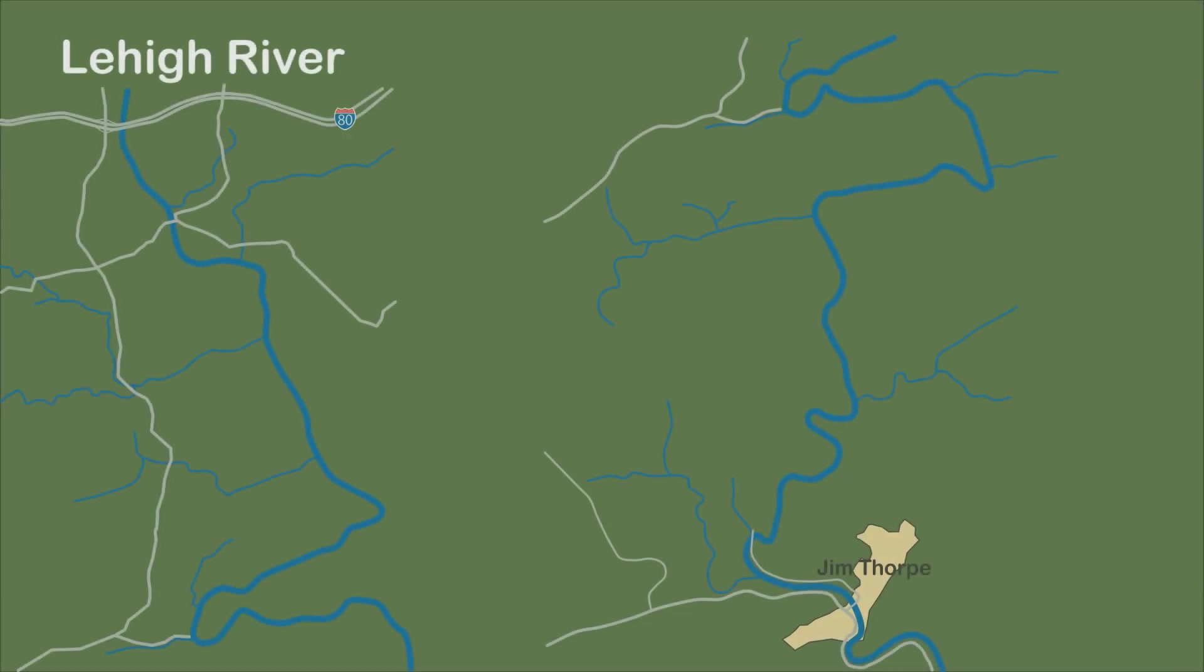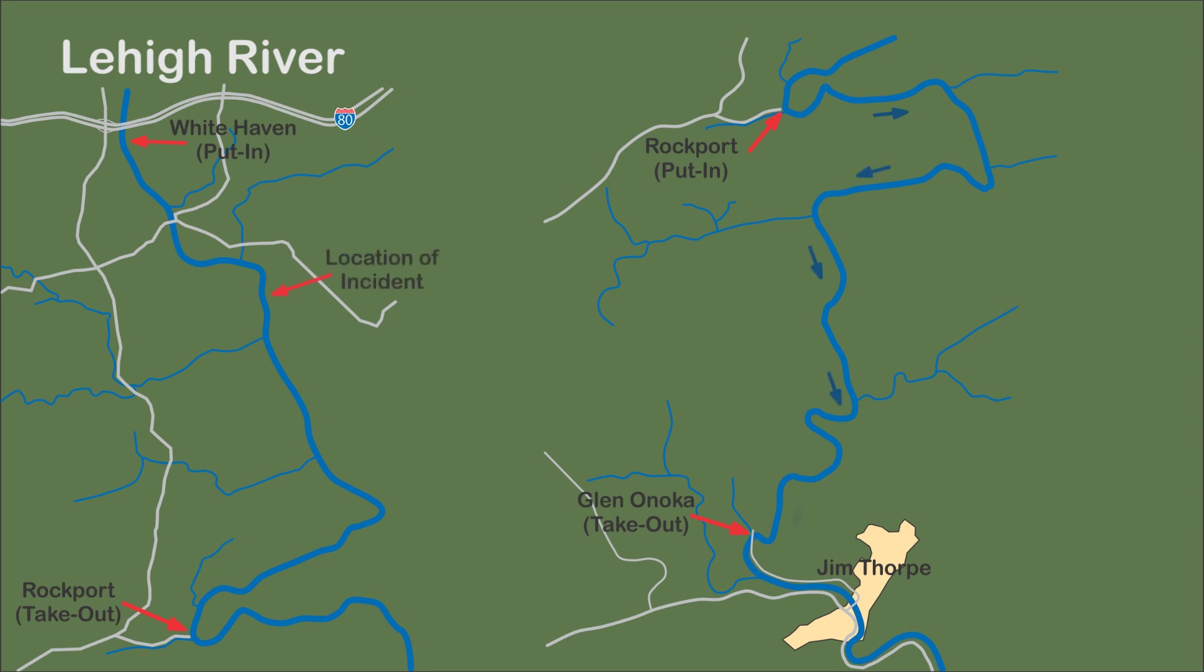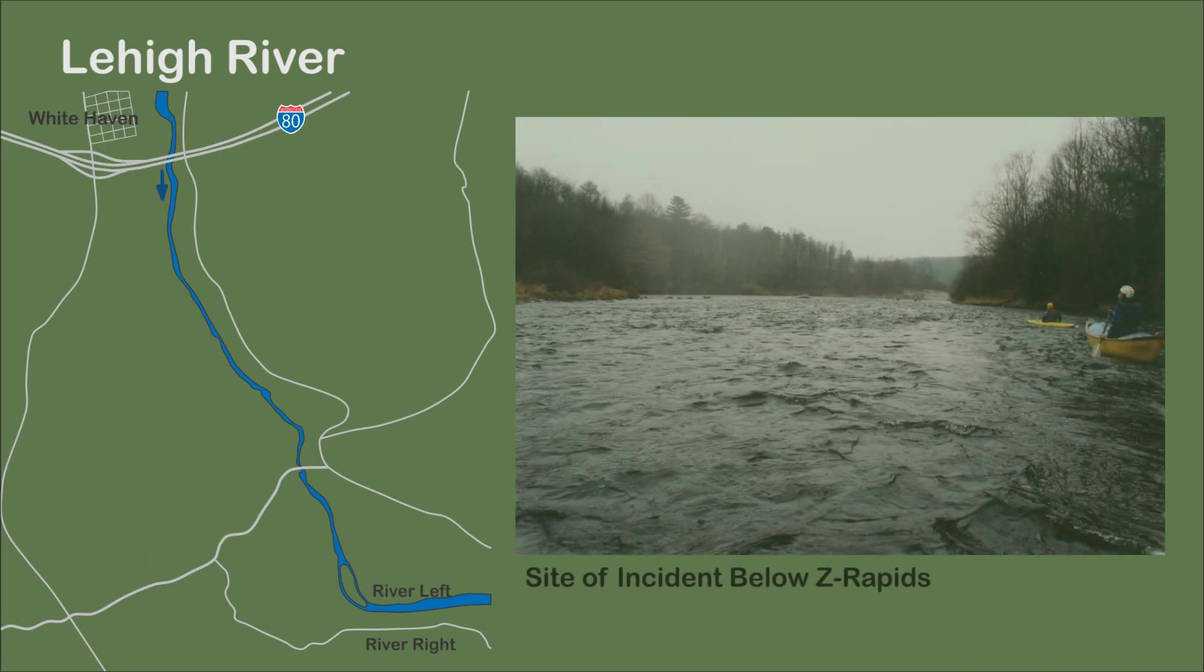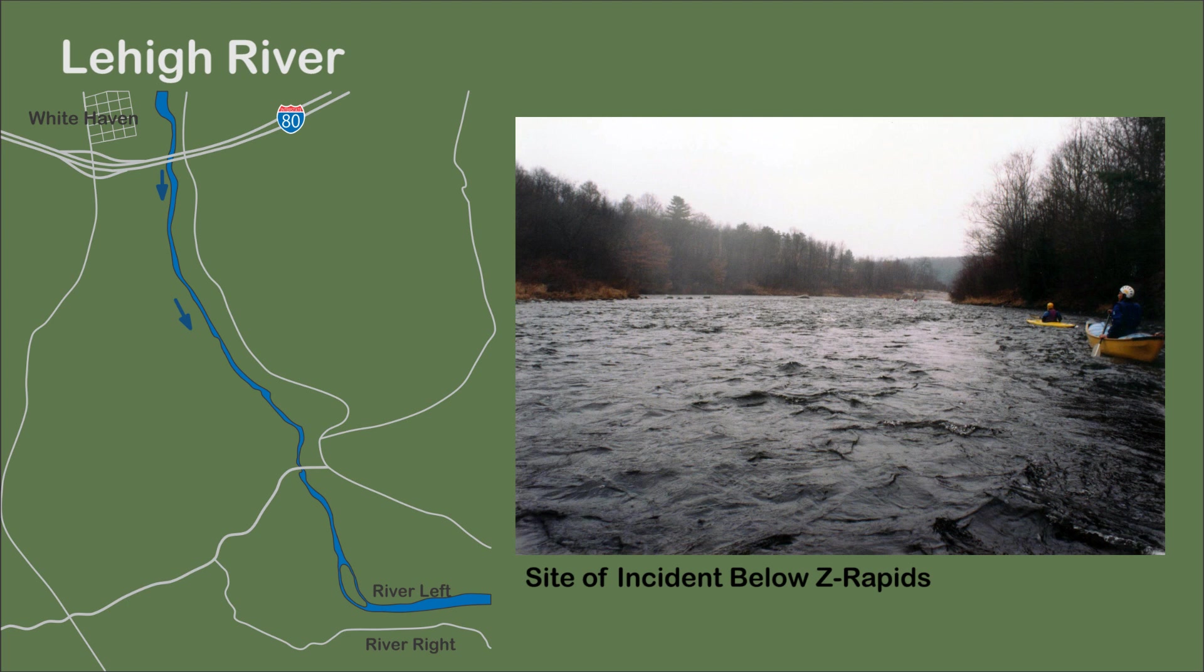The whitewater trip occurred on the 8-mile section of the Lehigh River from Whitehaven to Rockport. There were also trips on the 16-mile lower section from Rockport to just upstream of Jim Thorpe. It was a typical whitewater release on the Lehigh River in the range of 750 cubic feet per second. The river is generally rated as a Class 2-plus on the scale of river difficulty.